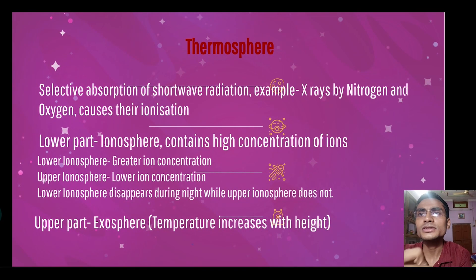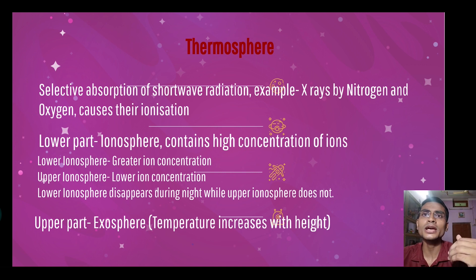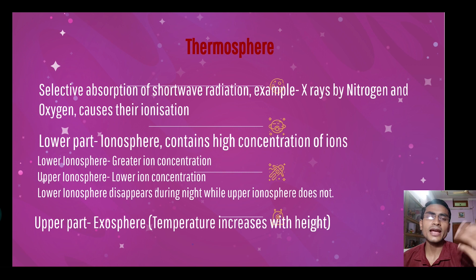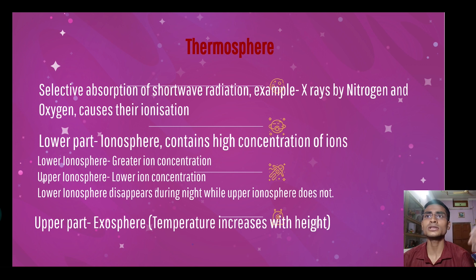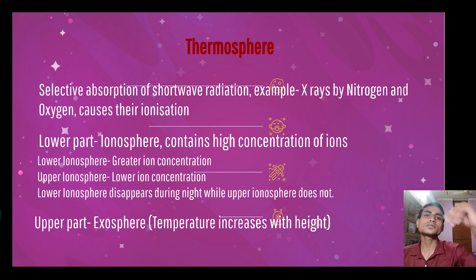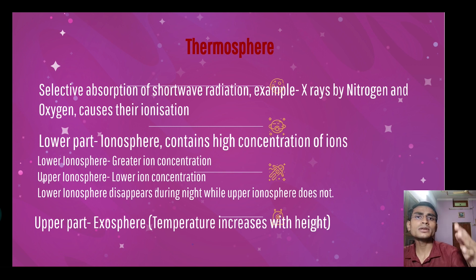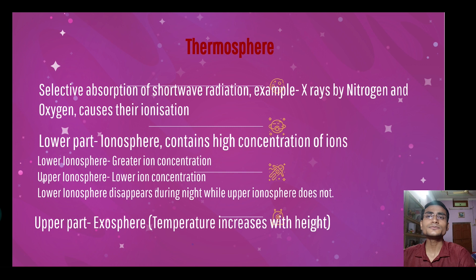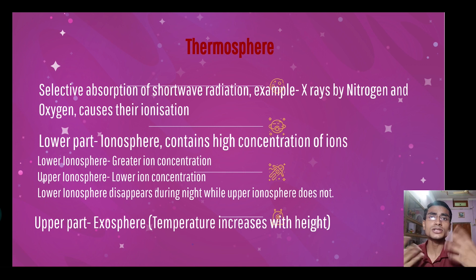After mesopause comes the thermosphere. In the thermosphere there is selective absorption of short-wave radiation — meaning solar radiation is selectively absorbed in thermosphere. X-rays are absorbed by nitrogen and oxygen, causing ionization. Thermosphere has two parts: a lower part and an upper part. The upper part has a high concentration of ions. The lower part of thermosphere is called the ionosphere — we call it ionosphere because of the high concentration of ions present there.